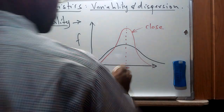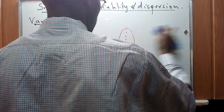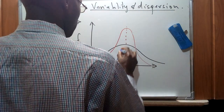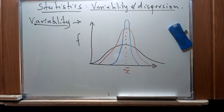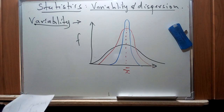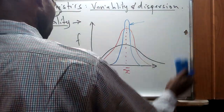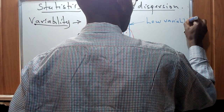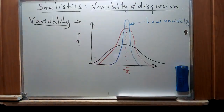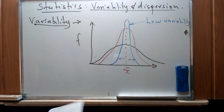I am going to add a third graph here for further illustration. So this is a third range of data appearing on the graph. For this distribution that does not go far away from the center of distribution, it is going to have a low variability.